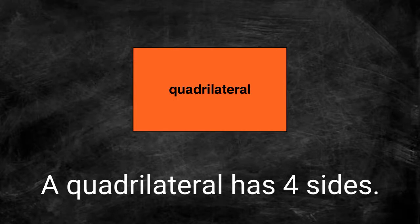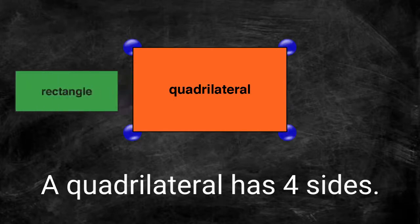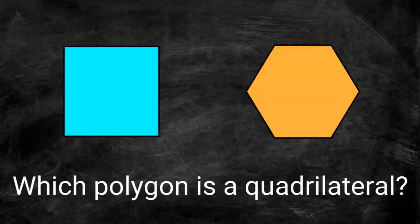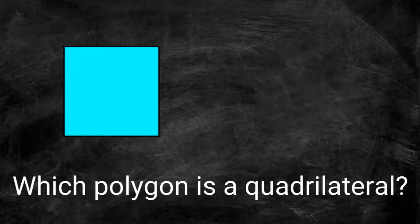A quadrilateral is a polygon with four sides and four vertices. Which polygon is a quadrilateral? This polygon has four sides and four vertices. This is a quadrilateral.